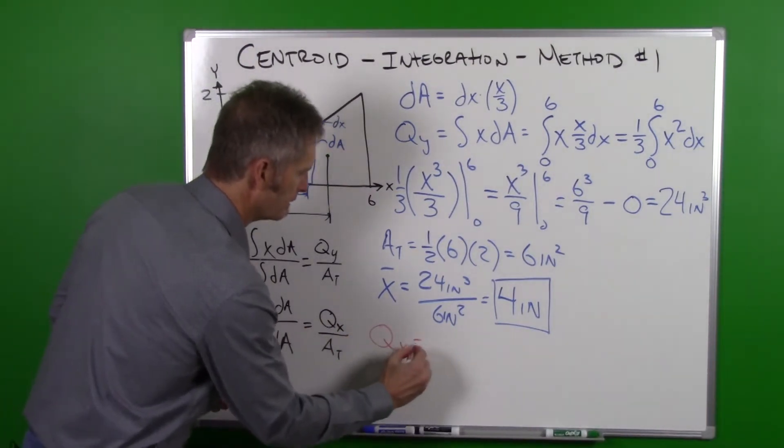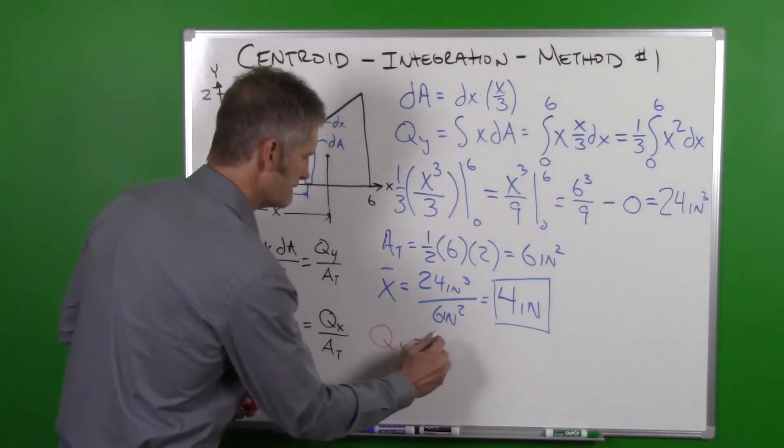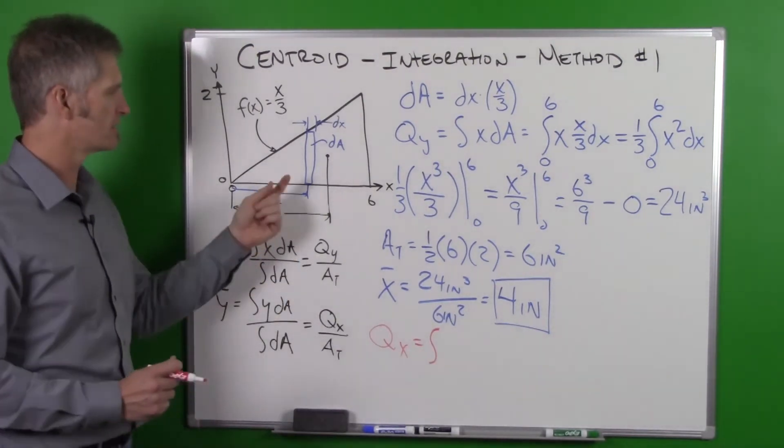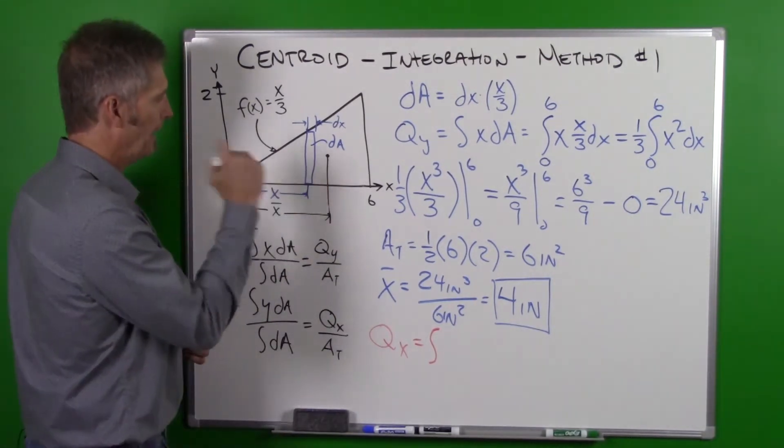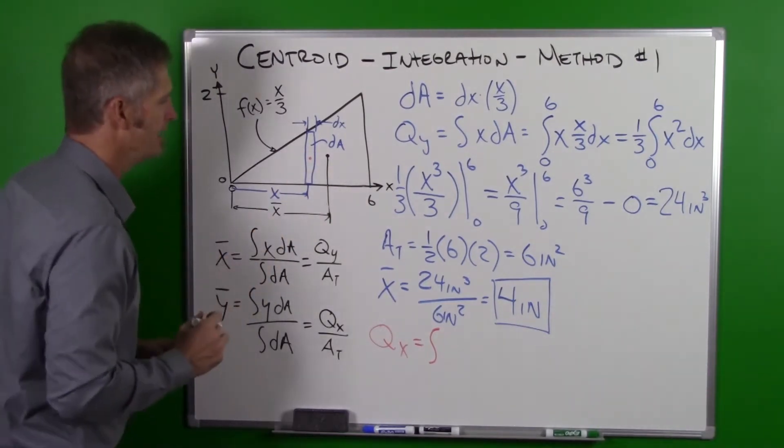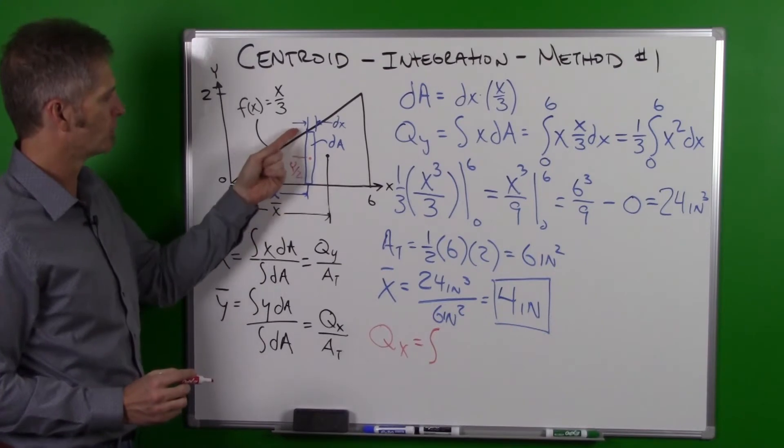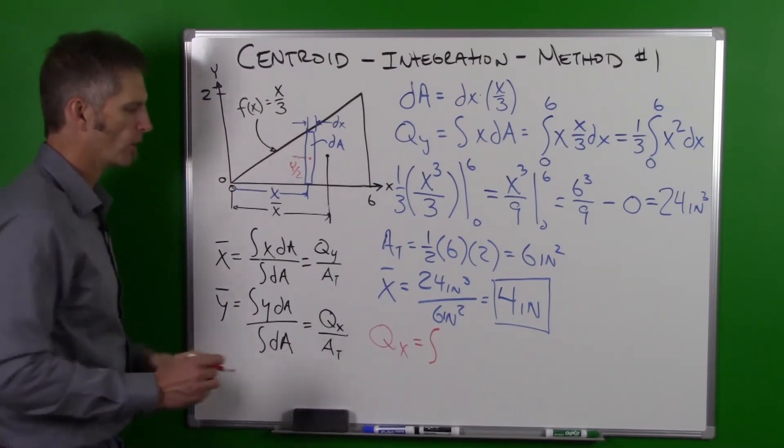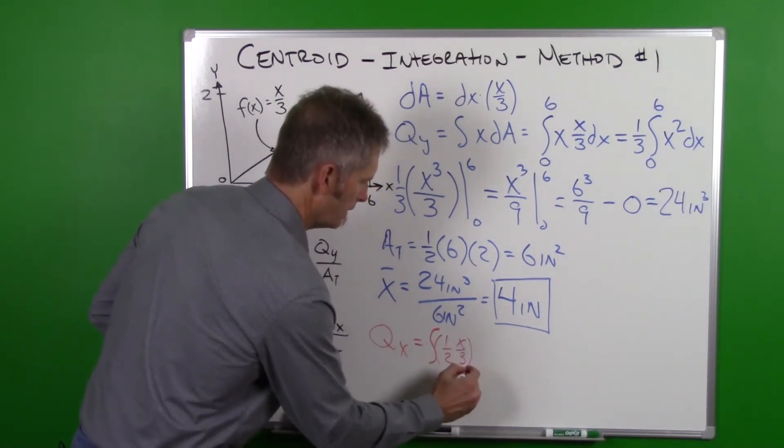We can use the same dA, we can use the same dx, but our qx is going to look a little bit different because it's the integral of y dA. In this case, y is the y to the centroid of our dA. So we can go up to our centroid of our dA, and this is in the center so this is really y divided by 2, or the total height divided by 2. We can then take our function which is x divided by 3, or one half of that, so one half x divided by 3 is our y.